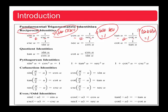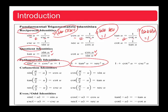We also have the quotient identities: tangent u can be written as sine u over cosine u, and cotangent u can be written as cosine u over sine u. And we have the Pythagorean identities: sine²u plus cosine²u equals one; one plus tangent²u equals secant²u; and one plus cotangent²u equals cosecant²u. Later I'll show you how to use these properties to solve actual problems.